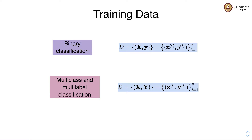In the case of multi-class and multi-label classification, the only difference is in terms of labels. In binary classification, we have a label vector, whereas in multi-class and multi-label classification, we have a label matrix. An individual example has a feature vector and a label vector. The only difference between these two settings is how the label is represented. In binary classification, we have exactly one label per example, but in multi-class and multi-label setup, we have a vector of labels for every example.